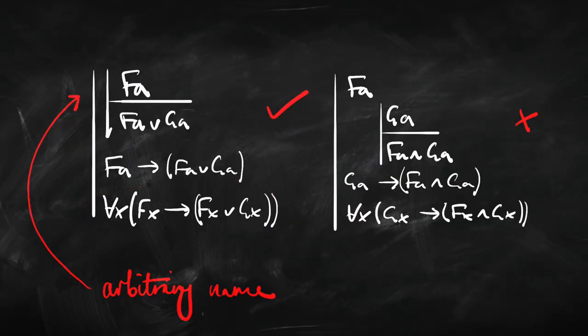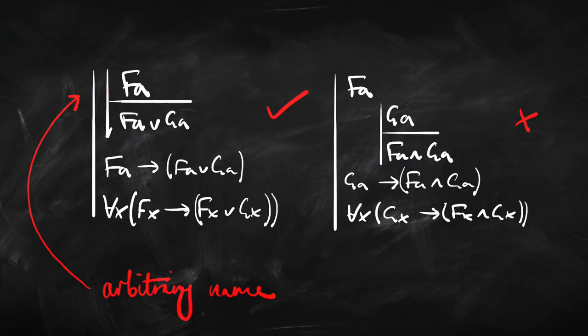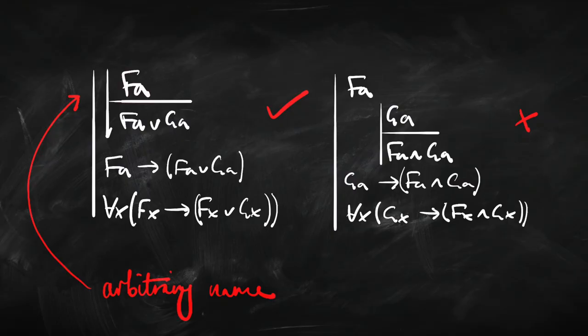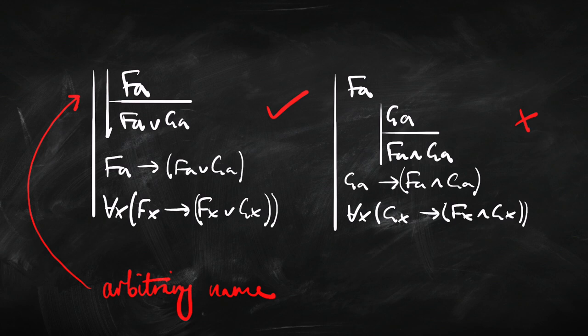To infer 'for all x, something,' we have to show the something holds of an arbitrary individual — meaning we start with a name that hasn't appeared in the proof before. Technically the exact criterion is that it can't appear in any undischarged assumption or premise. To keep it simple, just treat A as a brand new name. If you use a brand new name, it will act as an arbitrary name, and you'll be able to safely infer the universal quantifier.